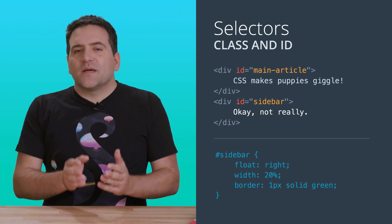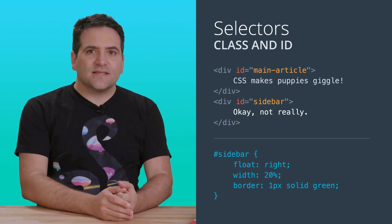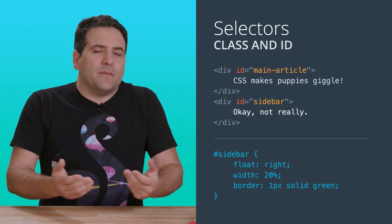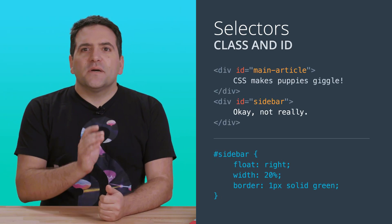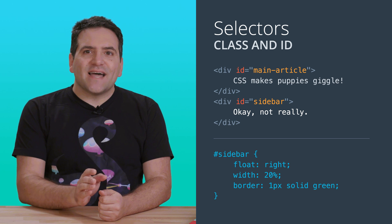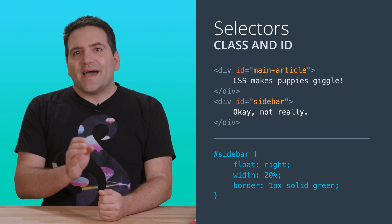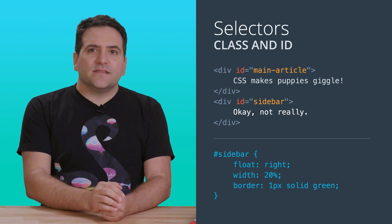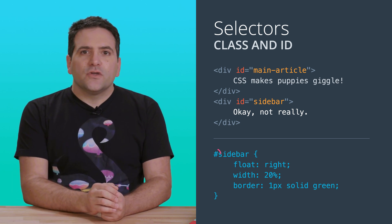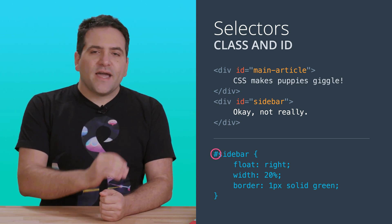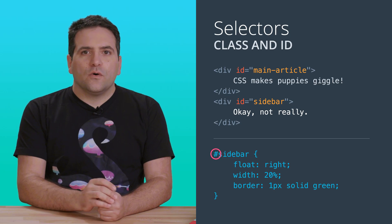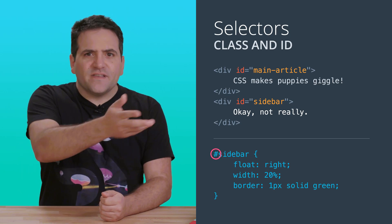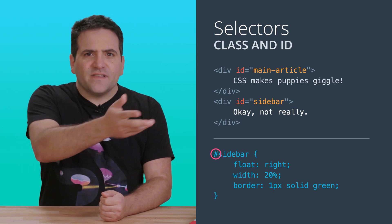ID values come from the same place that class values do — you just make them up. But to apply a style to elements by ID, instead of a dot in the selector, you put a hash mark, or number sign.